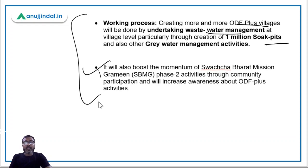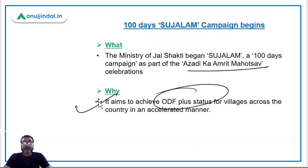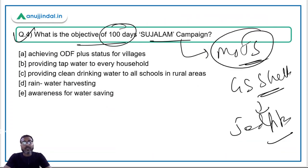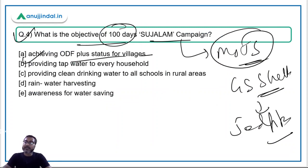The campaign will also boost community participation and increase awareness about ODF Plus activities. The objective of the 100-day Sujalam campaign is achieving ODF Plus status for all villages, and it has been launched as part of Azadi Ka Amrit Mahotsav. Option A is the correct answer.